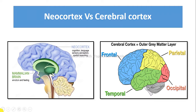Neocortex has two types, i.e. pro isocortex and true isocortex, whereas cerebral cortex also has two parts named as neocortex and allocortex. Neocortex covers the two cerebral hemispheres, whereas allocortex covers the hippocampus and olfactory lobe.